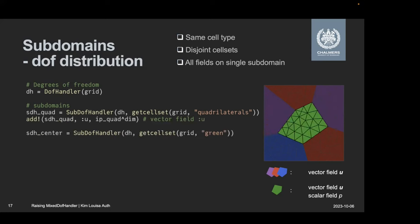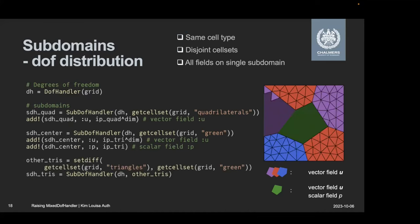And then I go on to the next subdomain, which is the central grain. Since I wanted to get an extra field, it has to be its own subdomain. So I define that via the sub DofHandler. These are all triangles and they don't overlap with my quadrilaterals. And then I add the displacement field and also the pressure field to that. Then I'm done with this subdomain.